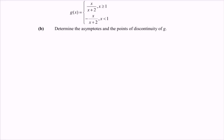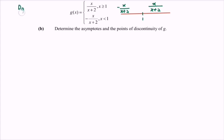Now referring to question B: determine the asymptotes and the points of discontinuity of g, and illustrate on a real number line. The domain of g is negative infinity to negative 2, union negative 2 to positive infinity. On the number line, for x less than 1 we use negative x over (x plus 2), and for x greater than or equal to 1 we use x over (x plus 2).